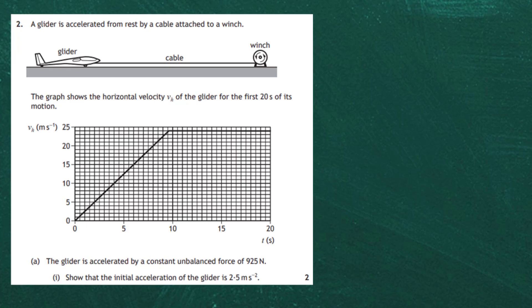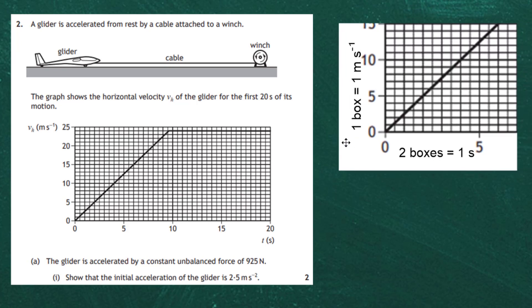For the first part of the graph we have a straight line, which tells us constant acceleration — it's sloping upwards. Further along we have constant velocity, which means no acceleration. We can interpret the graph that way. The next thing to interpret is the scale of the graph.